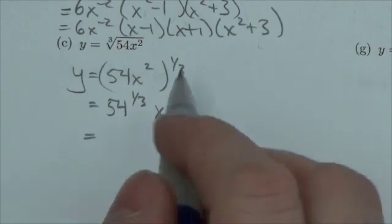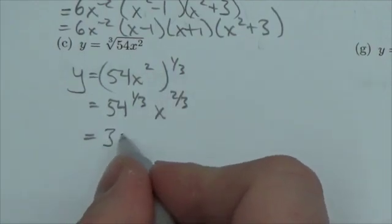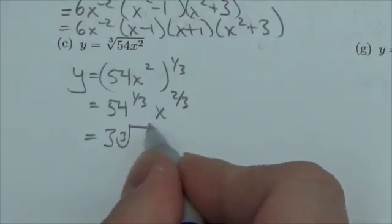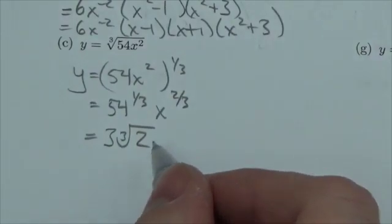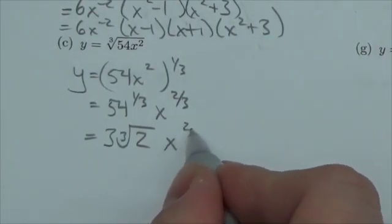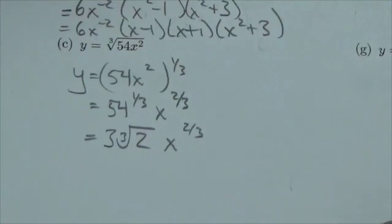That is going to be 3 times the cube root, which in this case is going to be the cube root of 2. And I'm going to write it like that simply because it's a coefficient up front here, times x to the 2/3. Now I'm in a position where I feel much better about taking the derivative.